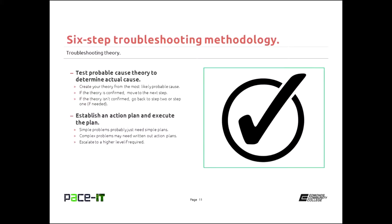Assuming your theory was proven correct, now you need to establish an action plan and execute it. For simple problems, you might just need a very simple plan and probably won't need to write it out. But if it's a complex problem with several variables, you may need to write out that action plan so that you have the steps in order and don't skip any. This is also a place where if the plan requires steps you're not authorized to take, you need to escalate it up the chain of command.